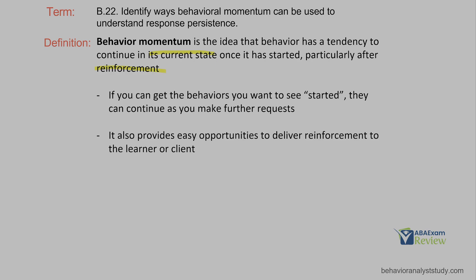As the analyst, you always want to view these ideas from the other side — yes, we can get behavior moving in the direction we want, but we've also got to consider what if behavior is not moving in the direction we want. What if there are negative behaviors we are seeing? Well, negative behaviors or problem behaviors can also build up behavioral momentum. So you've got to keep that in mind when you're looking at why behavior is persisting, both behaviors you want and behaviors you don't want. If you can get the behaviors you want to see started, they can continue as you make further requests. What you want to avoid is getting behaviors you don't want to see started, because those tend to continue.